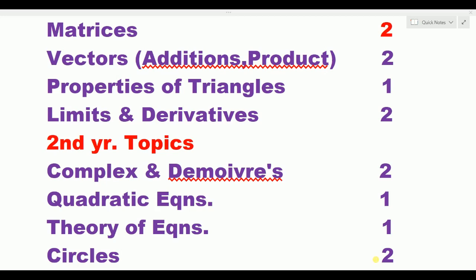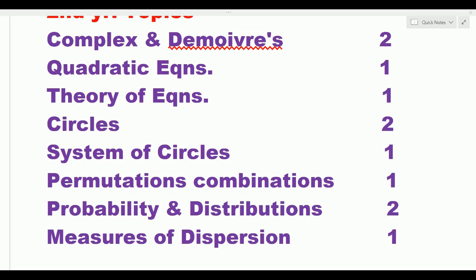Two days compulsory spend on circles — this is easy, nothing to worry about. Next: system of circles — one day spend. Permutations and combinations — one day. Probability and distributions: random variables and distribution topic — one day. Probability has three questions, distributions two questions, so probability and distributions together — five questions, two days spend.